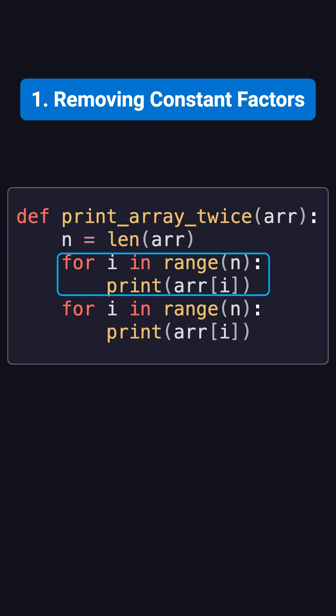The first loop prints every element once, and the second loop prints each element again. If we count the number of operations, the first loop does n prints, and the second loop also does n prints. That gives a total of 2n operations.